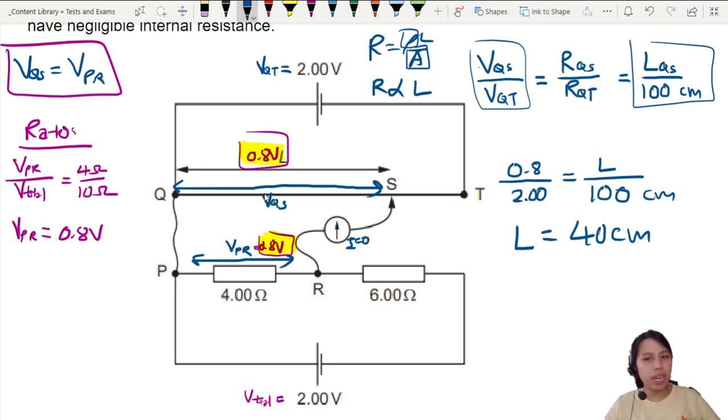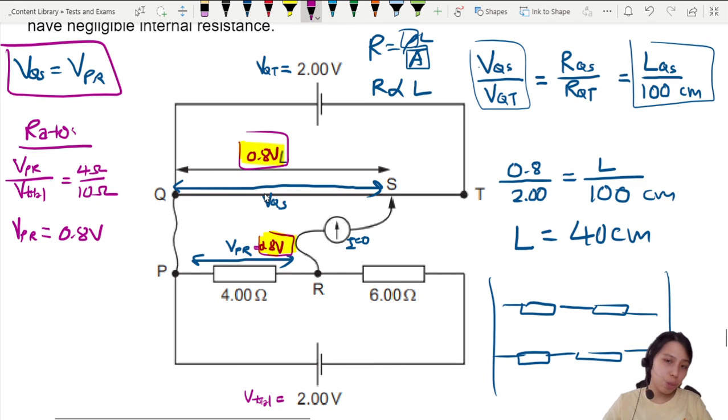You can redraw it if you find it hard to recognize, to something like this. There we go. Recognize this. Looks a bit more comforting. This is VQS. This is VPR. If they are balanced, they are the same. That's the end of this question.